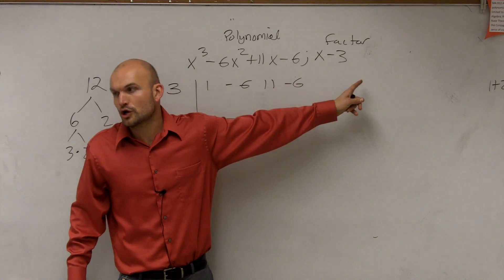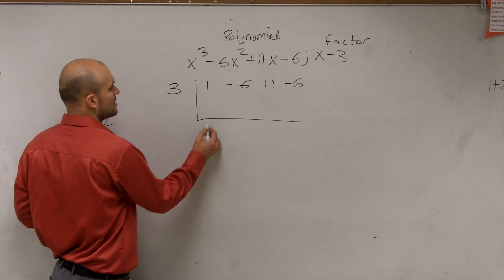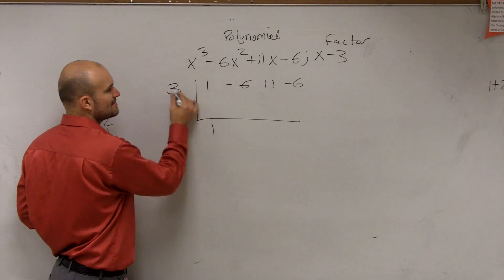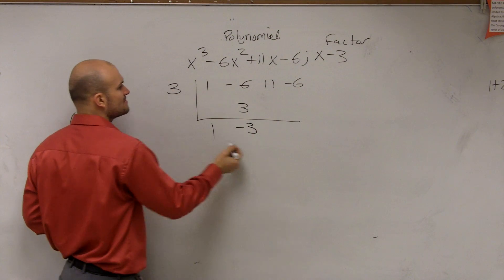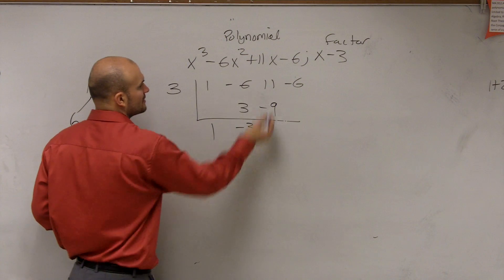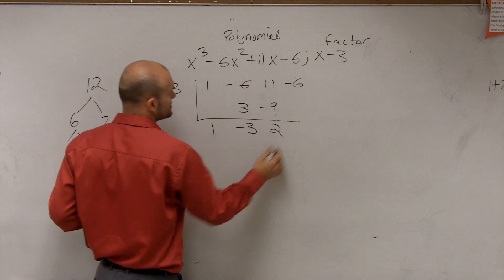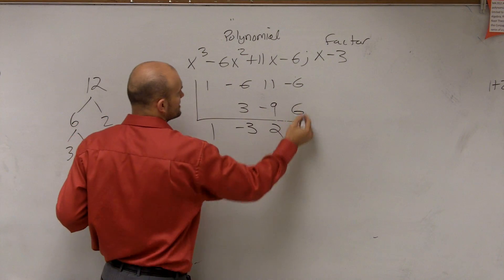So let's divide and see what our other factor is. So I bring down the 1. 1 times 3 is 3. Negative 6 plus 3 is negative 3. Negative 3 times positive 3 is negative 9. 11 plus negative 9 is positive 2. 3 times 2 is 6, gives you 0.